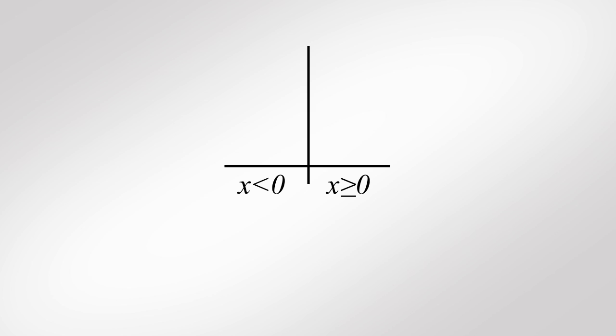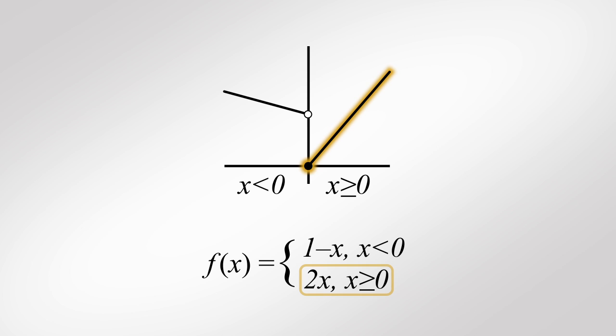Sometimes, when programming in MATLAB, we may want to perform different calculations based upon some condition. For instance, consider the piecewise function shown. When x is greater than or equal to 0, the function is calculated as 2 times x.